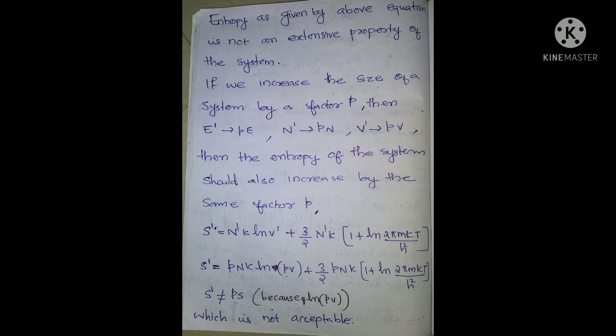Now, if the system size increases by a factor p, our energy becomes E′ = pE, particle number becomes N′ = pN, and volume becomes V′ = pV. If we have a p-factor increase, entropy also increases p times, meaning S′ = pS.